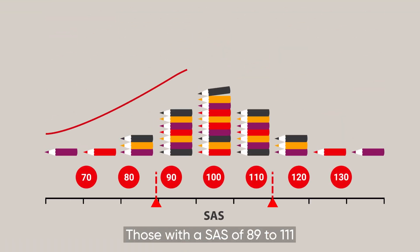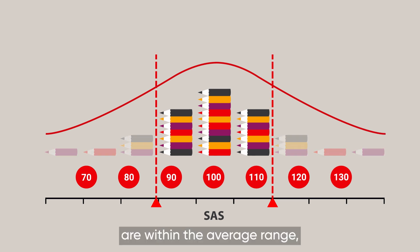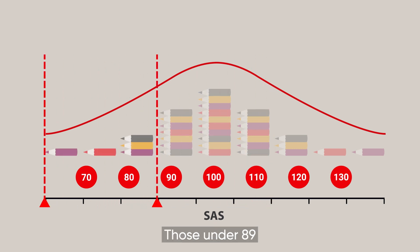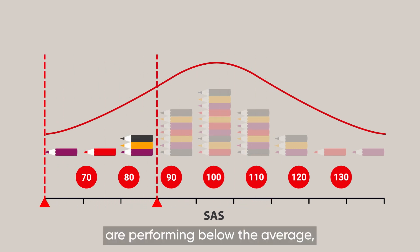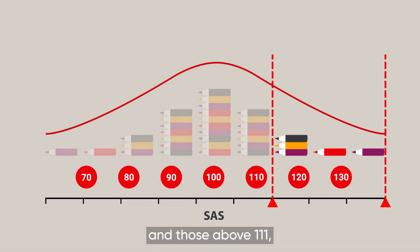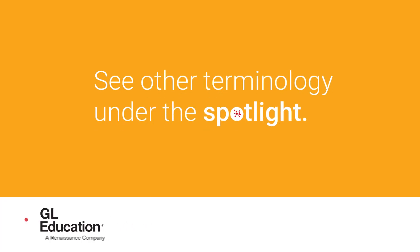Like with heights, those with a SAS of 89 to 111 are within the average range, along with the majority of learners. Those under 89 are performing below the average, and those above 111 are performing above average. See other terminology under the spotlight.